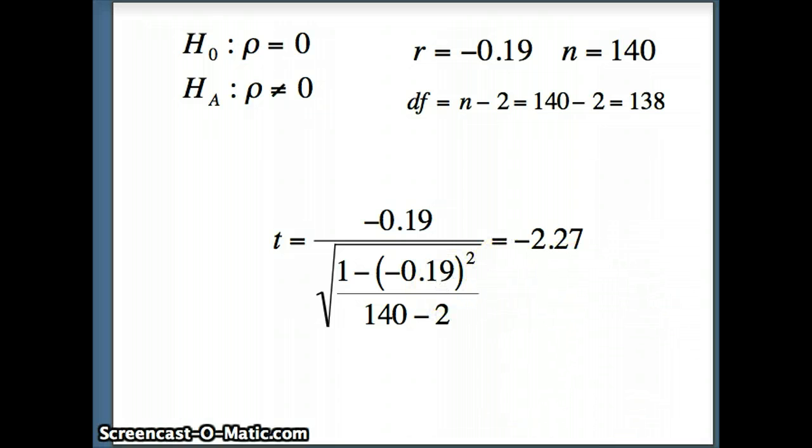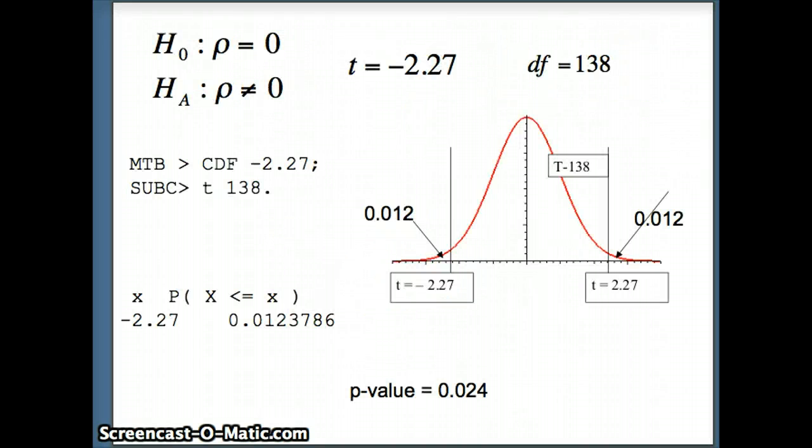So we have our test statistic T is negative 2.27. Our degrees of freedom here are 138.